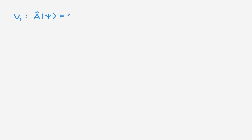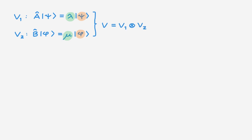Let's consider a state space V1, and in this state space we'll consider an operator A that obeys this eigenvalue equation. As usual, the lambda here are the eigenvalues and the psi here are the eigenstates. We also consider another state space V2 in which we'll work with an operator B that obeys this other eigenvalue equation, where the mu are the eigenvalues and the phi are the eigenstates. Starting from these two state spaces we can build the state space V as the tensor product between V1 and V2. We consider an operator C that acts on V, and this will be its eigenvalue equation where the omega are the eigenvalues and the chi are the eigenstates.